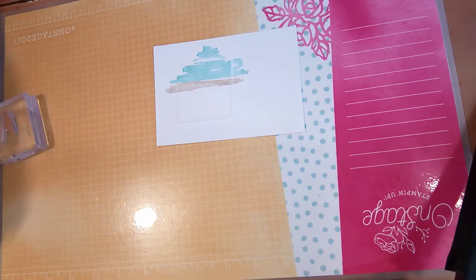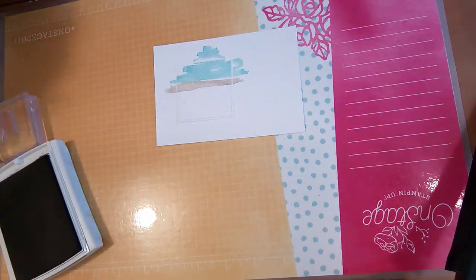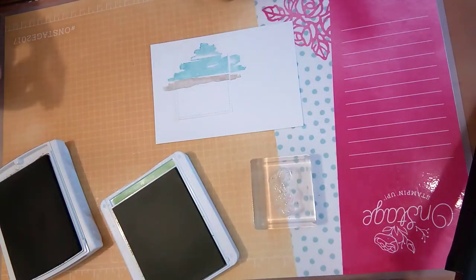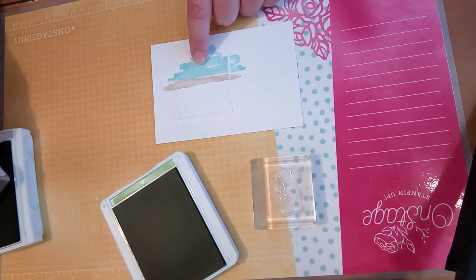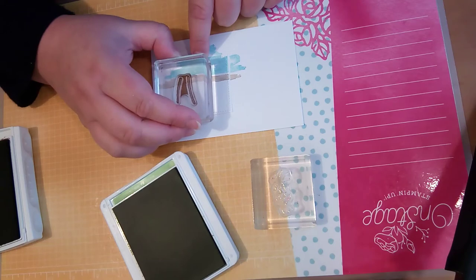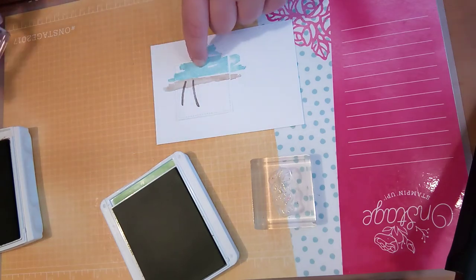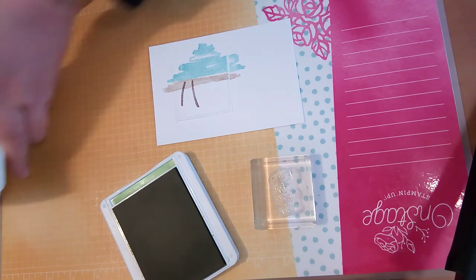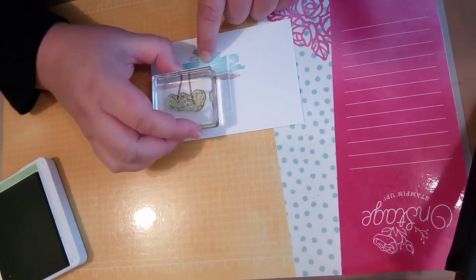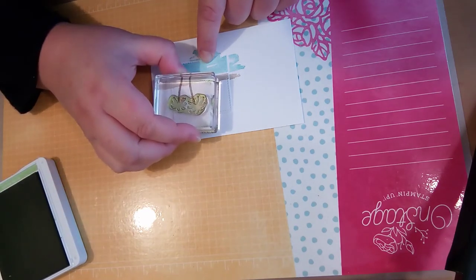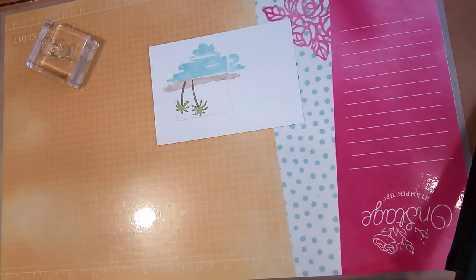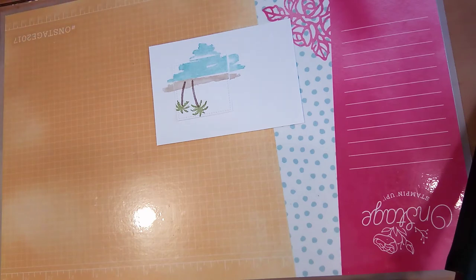Okay now we will just grab the palm tree trunks and leaves. So I have got Soft Suede and Pear Pizzazz. I am just going to do these off to the side there, sort of down there, and the ferns, palm ferns to go on there. I love how good photopolymer is for looking through and lining up these images. So easy, nice and easy.